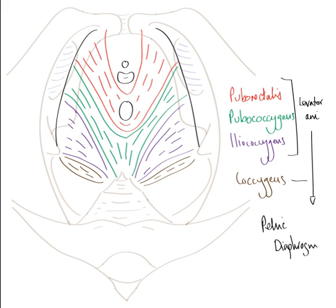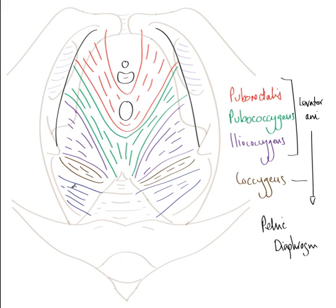A further muscle often seen in this region is piriformis, but piriformis does not form part of the pelvic diaphragm. Piriformis attaches to the anterior surface of the sacrum and leaves the pelvis via the greater sciatic foramen. Here in blue we can see the two piriformis muscles coming from the anterior surface of the sacrum and running out of the pelvis into the gluteal region via the greater sciatic foramen.